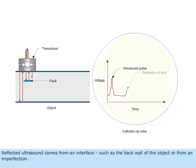Reflected ultrasound comes from an interface, such as the back wall of the object, or from an imperfection.